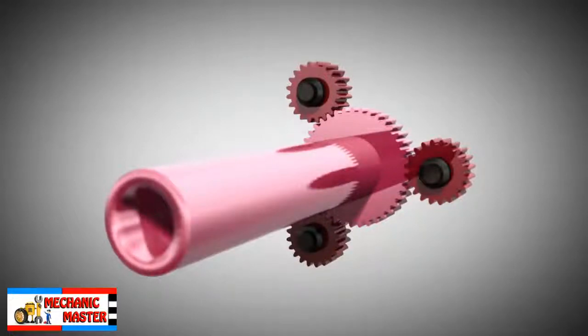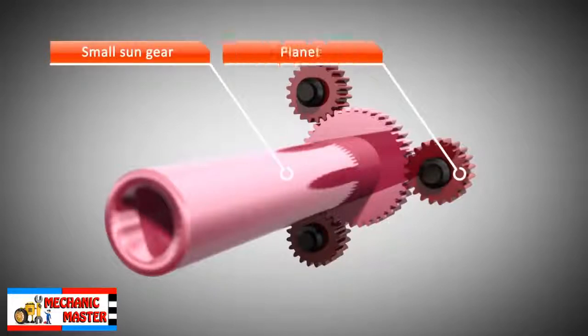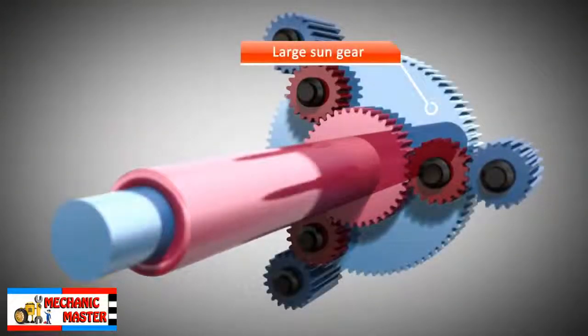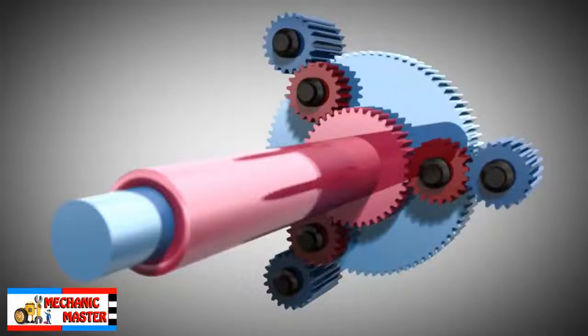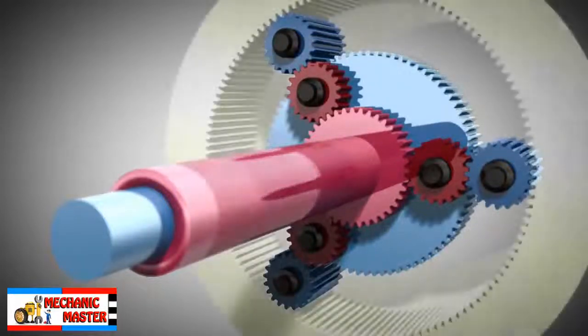It consists of a small sun gear that meshes with three gears that surround it like planets. The shaft of a large sun goes through the hollow shaft of the small sun. The outer planets couple with the large sun, the planets of the small sun and the ring gear.